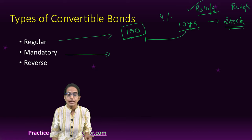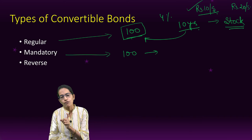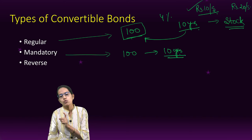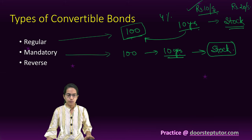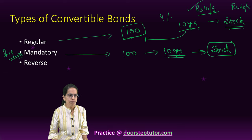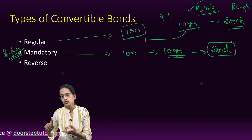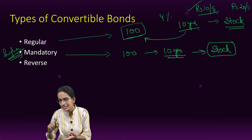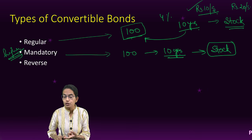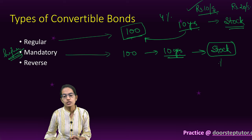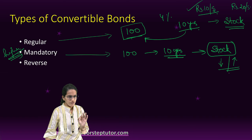A mandatory bond mandates that once your tenure of 10 years is done, you would definitely convert it into stock — it does not give you an option. Mandatory has a higher risk factor because it provides a higher rate of return. It provides a higher interest rate, and the reason is that after 10 years it forces you to convert into stock. At that time, the stock prices could decline or go up — it is unknown at this point.